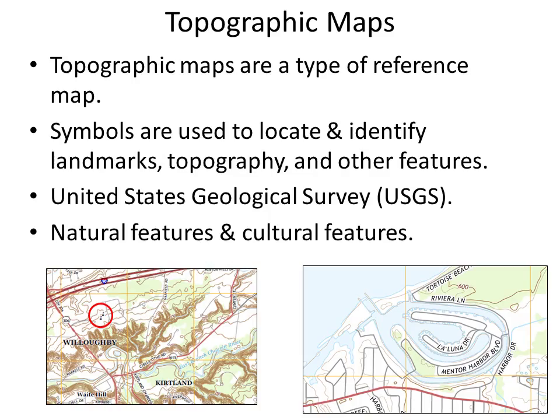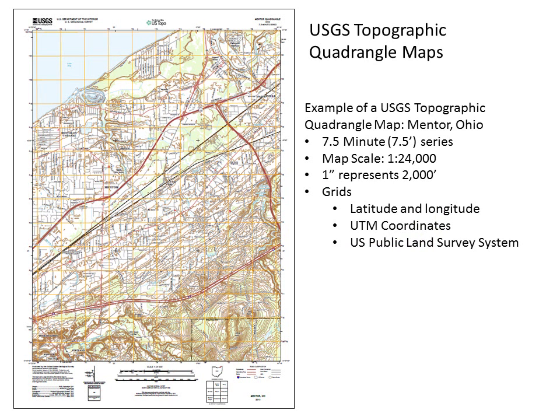You can also see city names and contour lines and so on. On the right-hand side, the example from Mentor Harbor — Mentor Marina and Mentor Harbor — where you can see roadways, street names, and so on, which are also cultural features on the map.